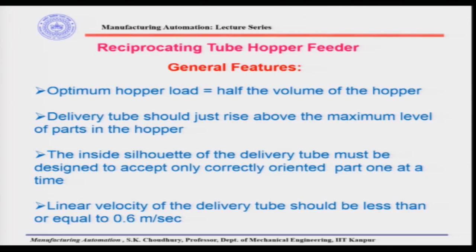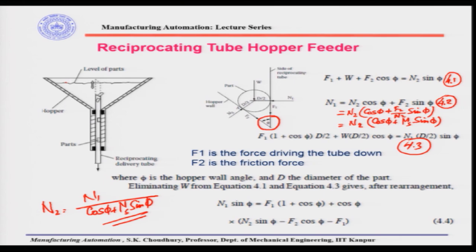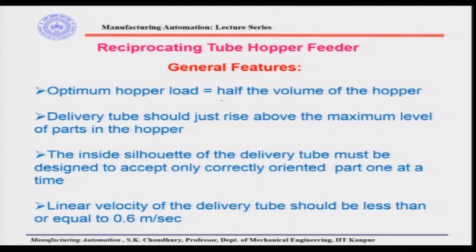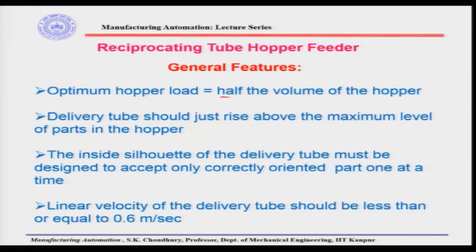For the reciprocating tube hopper feeder, the general features are as follows. The optimum hopper load — how many parts you put in as a mass — should normally be half the volume of the hopper. If there are more parts than that, the pressure on the tube increases and the tube has to move against higher resistance due to the large number of parts. Therefore, optimally it is taken as half the volume of the hopper.